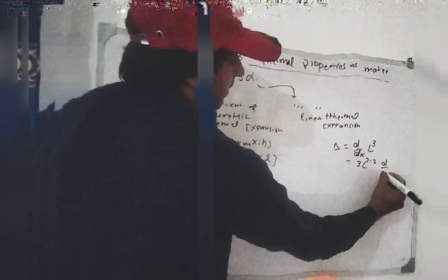Delta V is equal to 3 L squared times delta L. Substituting delta L equal to alpha L0 delta T, we get delta V is equal to 3 L squared times alpha L times delta T, which gives delta V is equal to 3 volume times alpha times delta T.